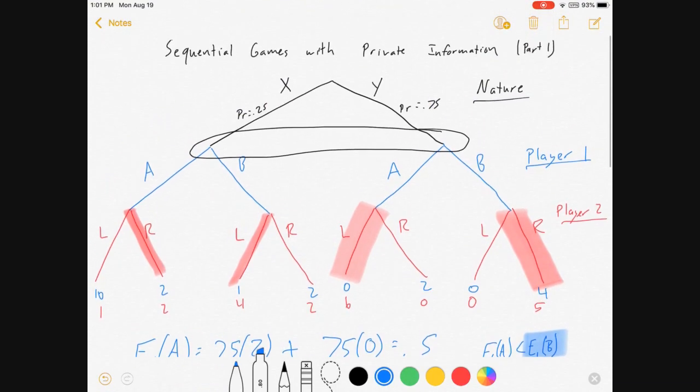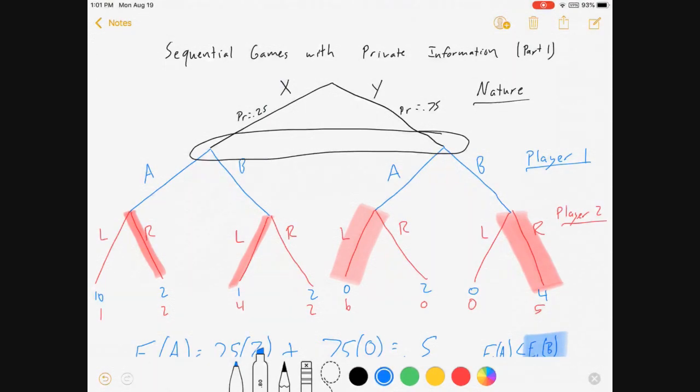Now this tells me something: expected value of A is less than the expected value of B, which means I prefer B over A. So player one doesn't know which side of the game they're on. They can't observe nature's choice, but they do know that on average they're better off choosing B than A. They won't win every time, but if they play this game enough times, they'll be better off doing B than A.